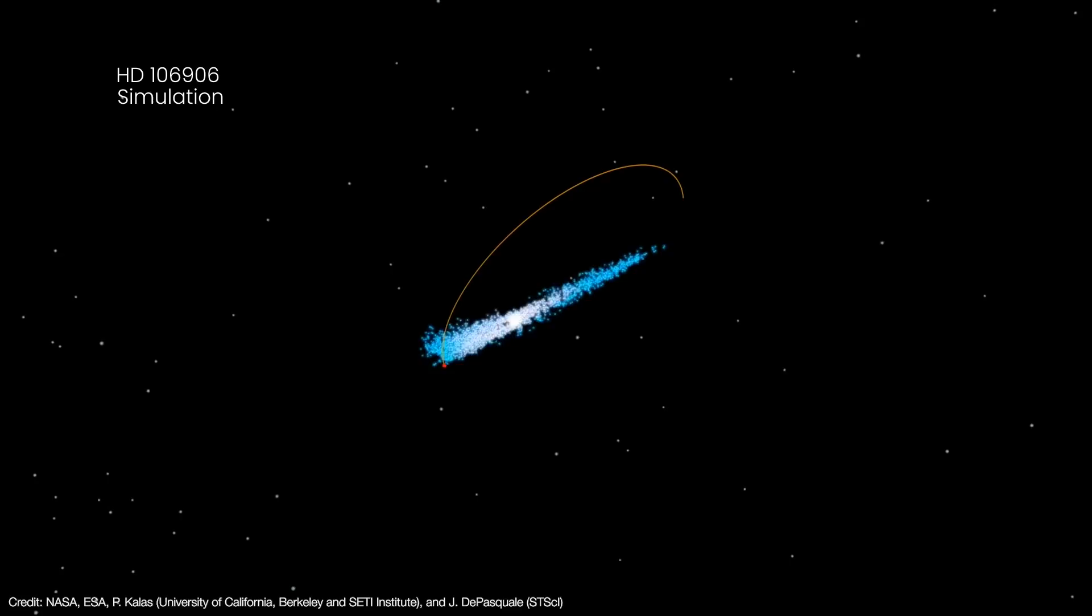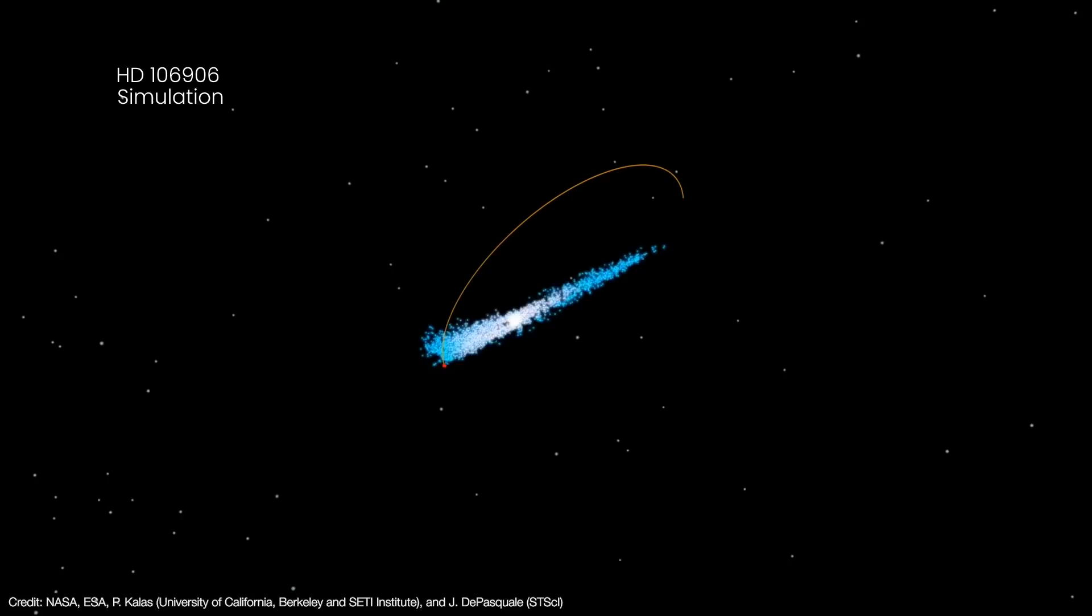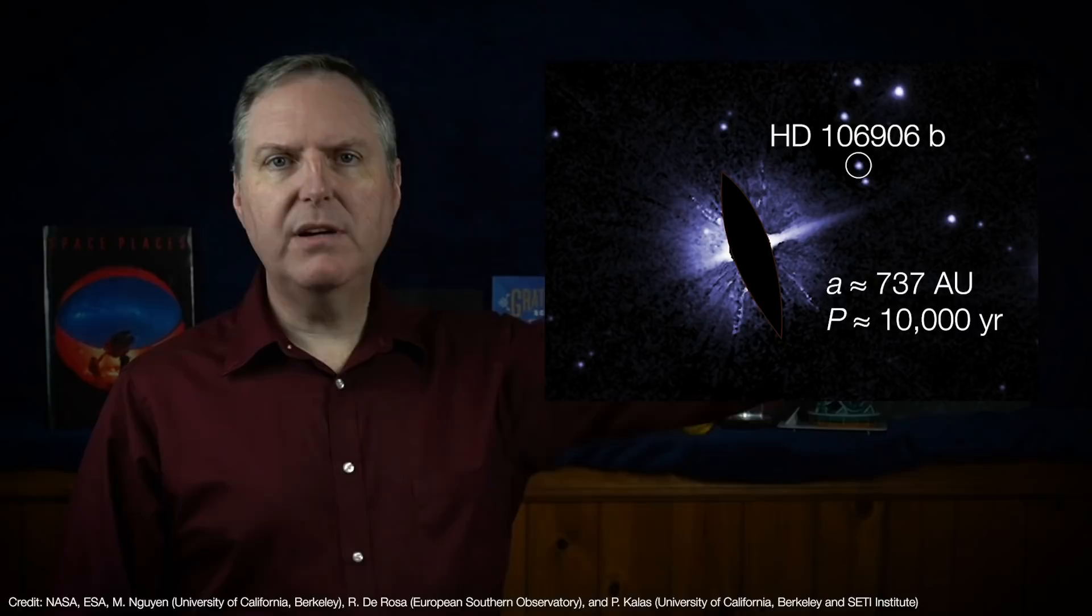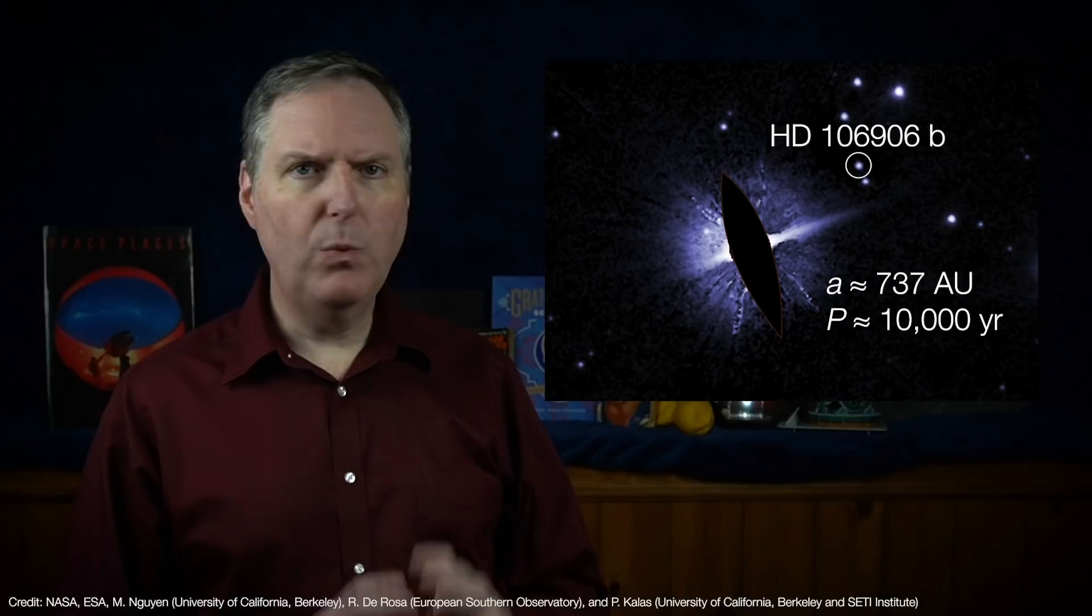But to confirm this hypothesis, the planet's orbit would need to be mapped out. However, at more than 700 AU from its host star, it would have something like a 10,000-year orbit and that's way too long to wait because we're going to miss out on the expanse. Fortunately, we don't have to wait quite that long.